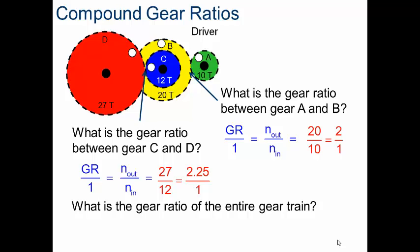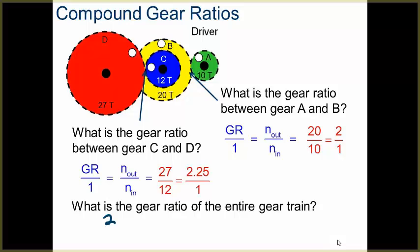To get the gear ratio of the entire gear train, I'm simply going to multiply my two individual gear ratios together. So this entire gear train would have a gear ratio of 4.5.